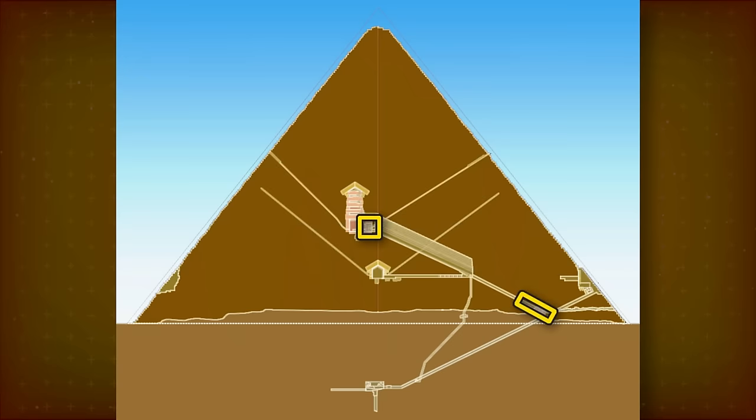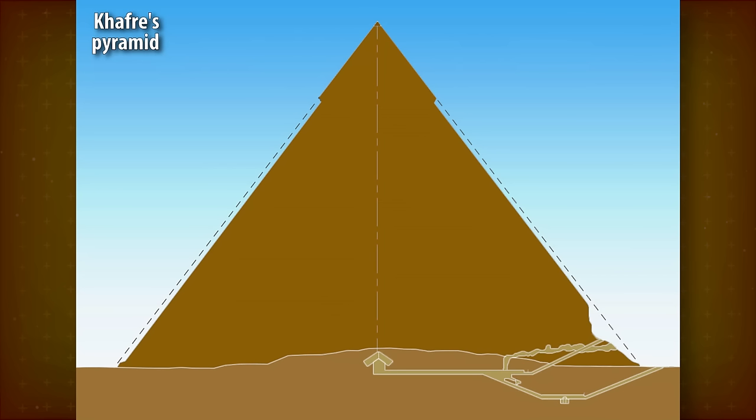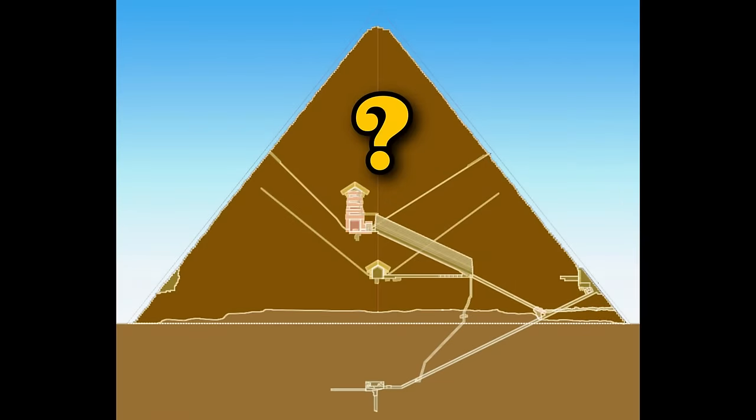The portcullis, plug blocks, and hidden prism stone tell us that after the funeral, no living person was meant to enter the chamber again. So who's the fresh air for? No other pyramid has ventilation shafts, even though some chambers are under a bigger volume of stone than Khufu's chamber. Why the need for ventilation in Khufu's case?